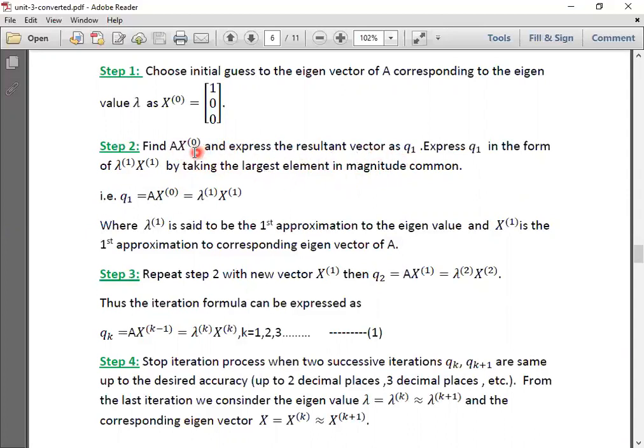X⁽⁰⁾ is the initial vector. By the definition, AX must be represented as lambda X. So this X⁽⁰⁾ is different from this X on the right hand side. X₁ is said to be the first approximation to the eigenvector of A, and lambda₁ is the first approximation to the eigenvalue corresponding to X.